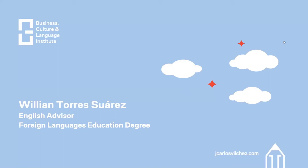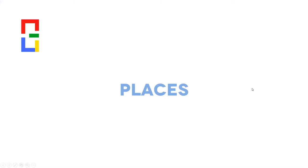Hello, good evening everyone. Today we are going to start with our lesson. This new lesson is about places. Do you know what places are? Places are all the things that we can see when we want to go to a specific place, like for example a park or houses. There are many different places — not just a park or a house, but also when we are on the street we can find many different places.